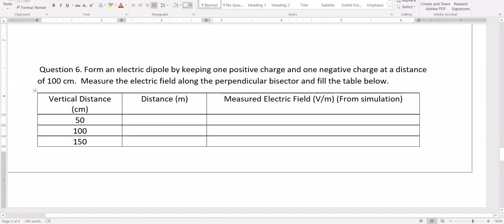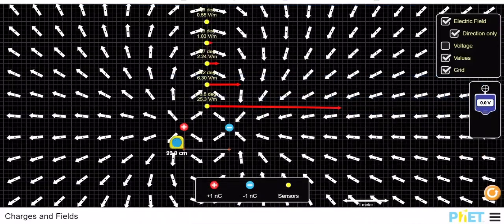That's how you measure the electric field along the perpendicular bisector. One thing I would like to point out: if you look at all of this, it gives you the direction of the electric field at this point. The electric field is only along the x-axis. Take a snapshot of this.